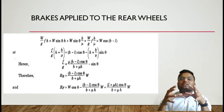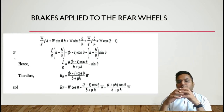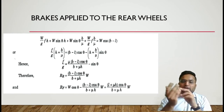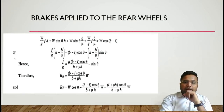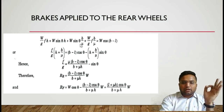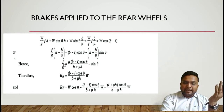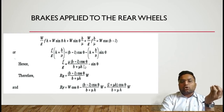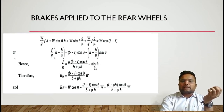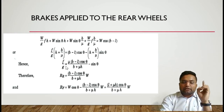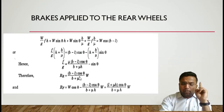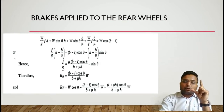We need to find the relationship between W sin theta, W cos theta, and the reaction forces. Taking sine theta terms on one side and cos theta on the other, along with the forces, the equation becomes: F/G equals Mu times (B minus L) cos theta upon B plus Mu H minus sin theta. The reaction at the rear wheel is R_R equals [(B minus L) cos theta] / [B plus Mu H] times W.